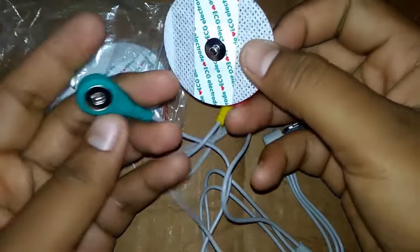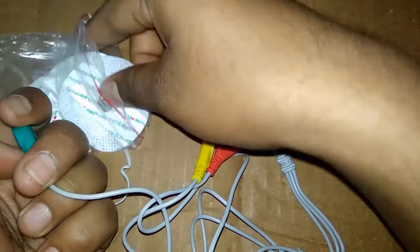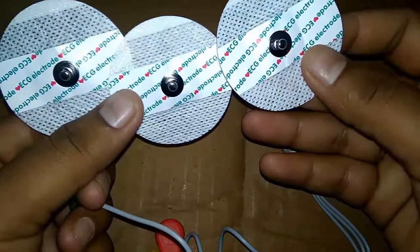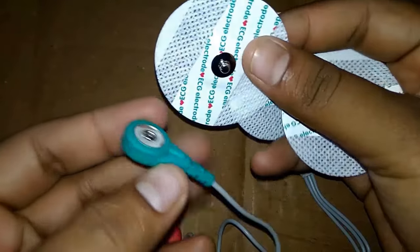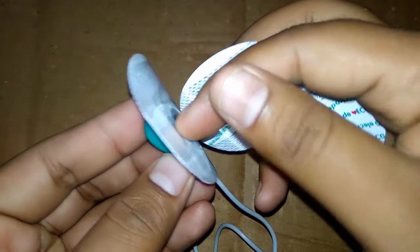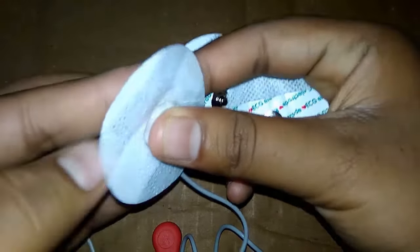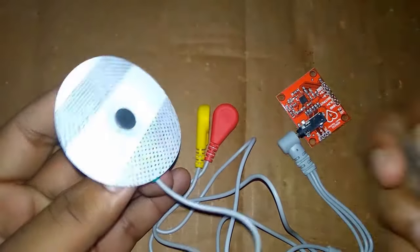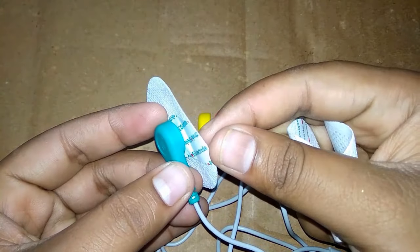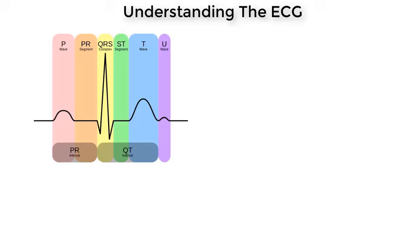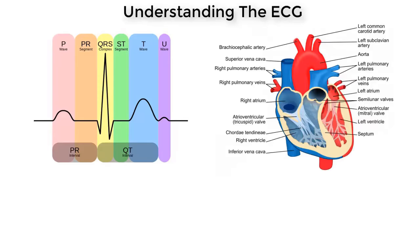These are the three paper-like electrode pad structures. They are attached to the body with glue or gel — the gel makes direct contact with the skin. You need to remove the backing and attach the pads to your body.